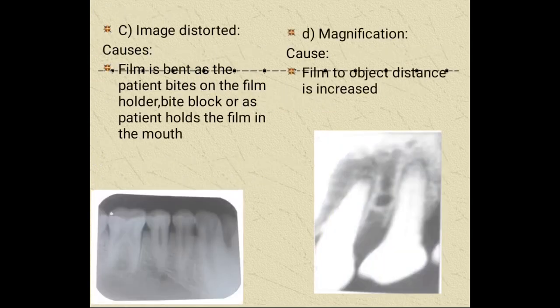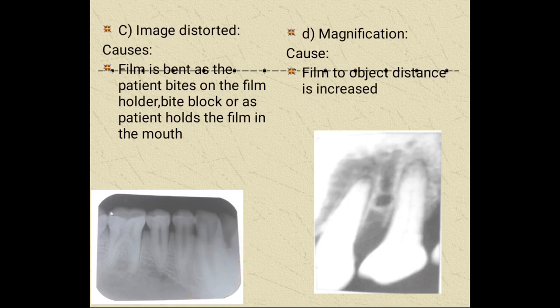Image distortion occurs when the film is bent as the patient bites on the film holder or bite blocks, or as the patient holds the film in their mouth. When the patient is biting, distortion of the image will happen.